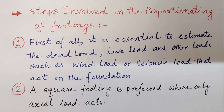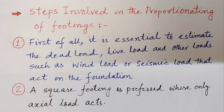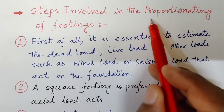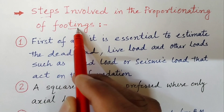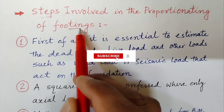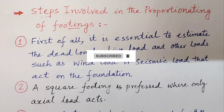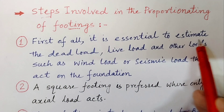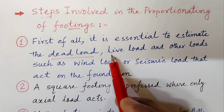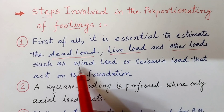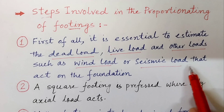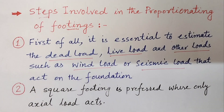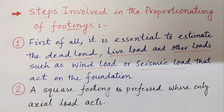An estimate of the differential settlement between the various footings and the angular distortion between the various parts of the structure is made. The maximum settlement, differential settlement, and angular distortion are compared with the permissible values given in different tables and/or accepted codes of practice. If they are not within the permissible limits, the shape bearing capacity is revised and the settlement computation is repeated to ensure all requirements are met.